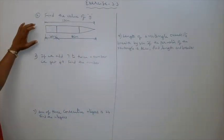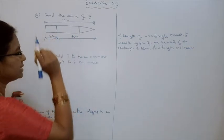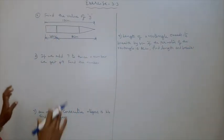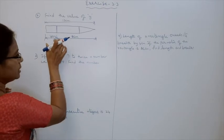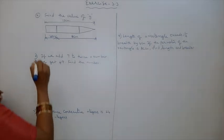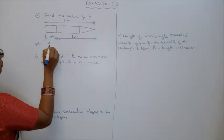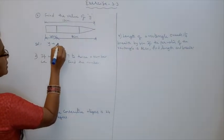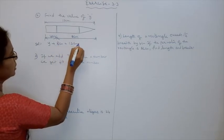Here one pen is there. What is the total length of the pen? 13 cm. They divided it into 2 parts. One part is y cm, second part is 8 cm. Find the value of y. Solution: y plus 8 is equal to 13 cm.